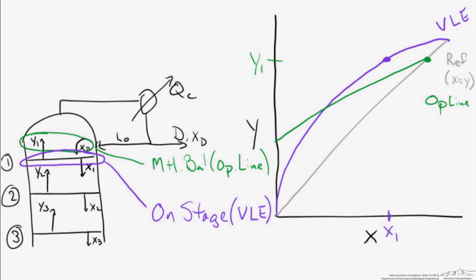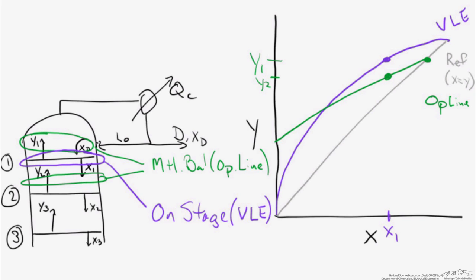So if we move down to the next section, we know the composition x1 leaving the first stage, and that has to be balanced with the vapor stream passing the other way. Because we're between stages, that's dictated by material balances, which derives our operating line. So we take composition x1 and read the operating line point that corresponds to it, and that gives us the composition of y2. As you notice, we're moving across and then down, across and then down — going from between stages to being on a stage, alternating between VLE and material balances.